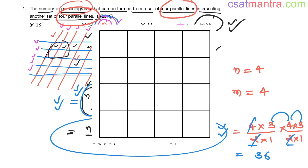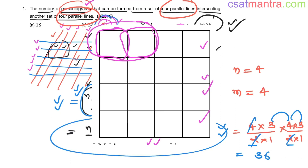If you don't know this concept and try to calculate the number of parallelograms by drawing the diagram, it will be too complicated — you won't arrive at the solution easily. Permutation and combination is all about counting; when counting is complicated, think of permutation and combination. See how easy the problem becomes with nC2 × mC2.